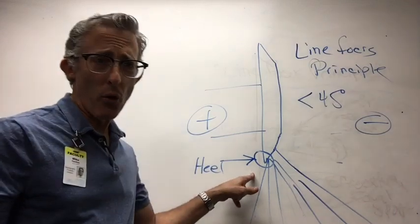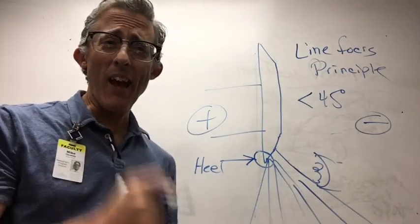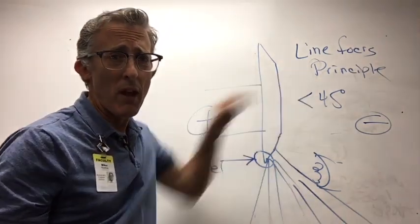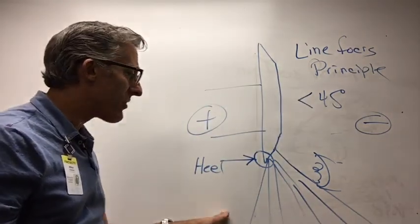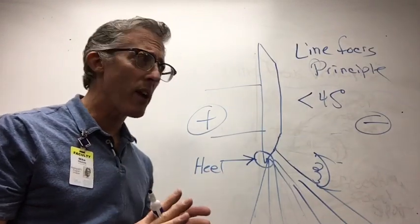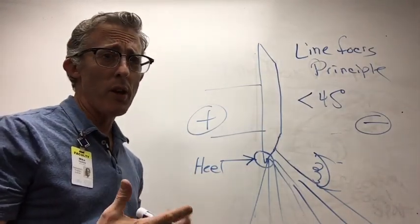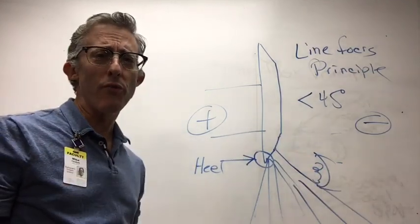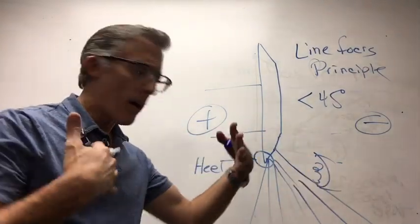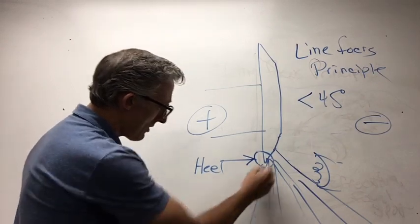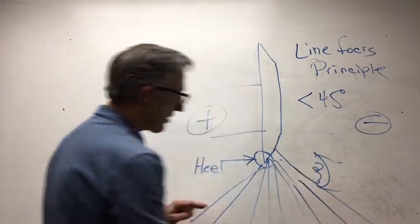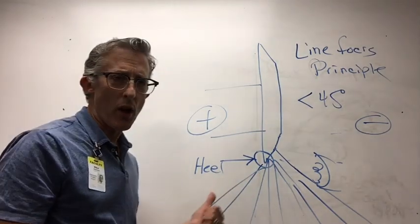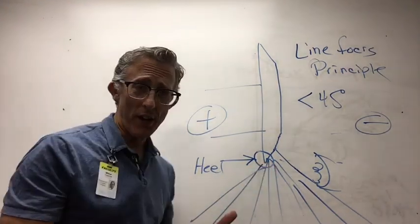The important thing to note about the anode heel effect, which again, is a byproduct and a symptom of the line focus principle, is that you're only going to notice the anode heel effect in any sort of measurable way when the collimators are opened all the way and you have a very, very large field size. And that is because as the collimators open up and your field size increases, it's going to be markedly clear that your intensity is dropping off on the anode side of the anode heel effect.